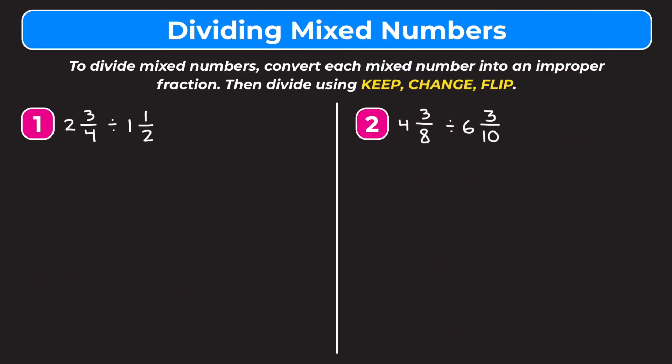In this video we're learning how to divide mixed numbers. At the top of our screen it says to divide mixed numbers: convert each mixed number into an improper fraction, then divide using keep change flip. So we're going to change each mixed number into an improper fraction and then divide the results like we normally would, using keep change flip.